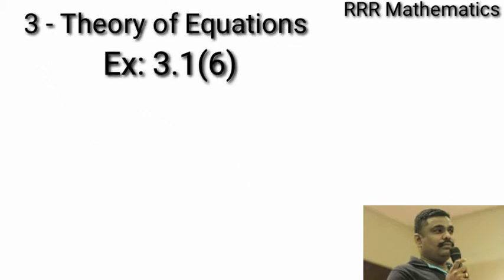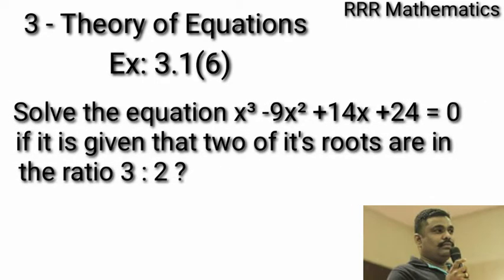Hi my dear student, today we will discuss Chapter 3 Theory of Equations, Exercise 3.1, Question No. 6. Solve the equation x cube minus 9x square plus 14x plus 24 equal to 0. If it is given that 2 of its roots are in the ratio 3 is to 2.